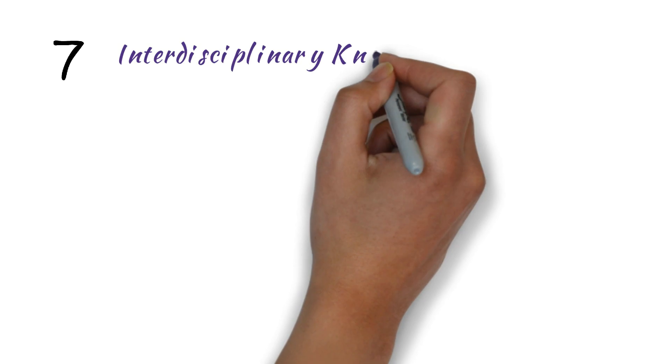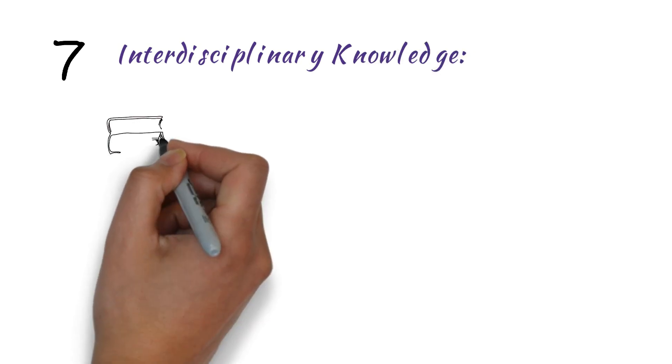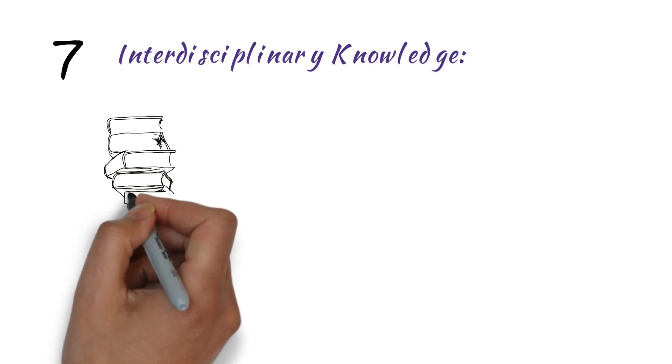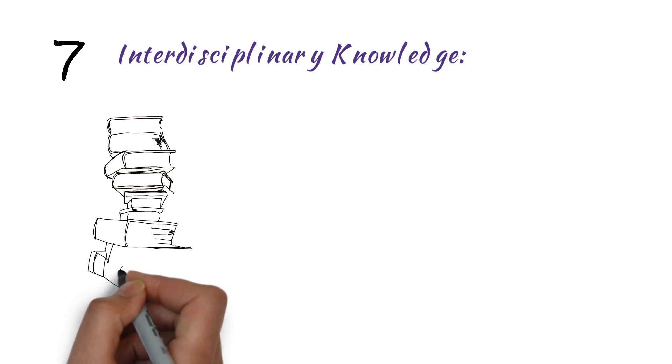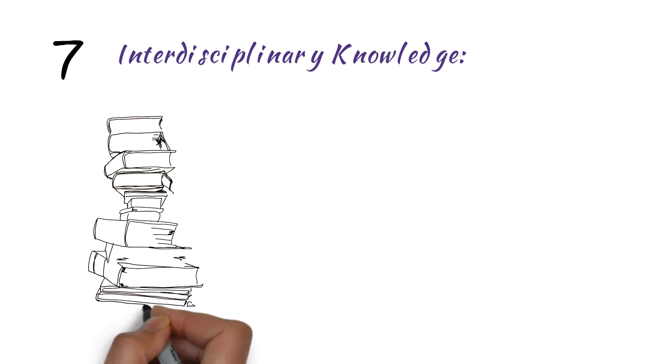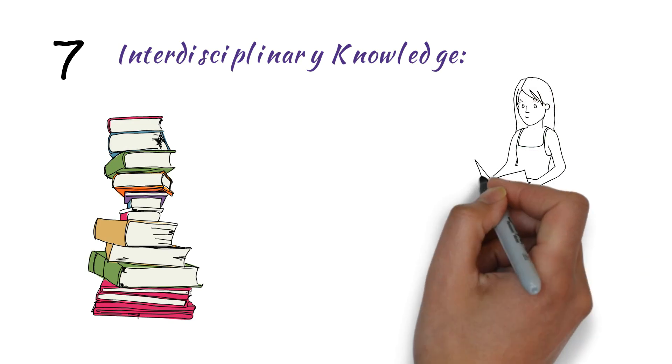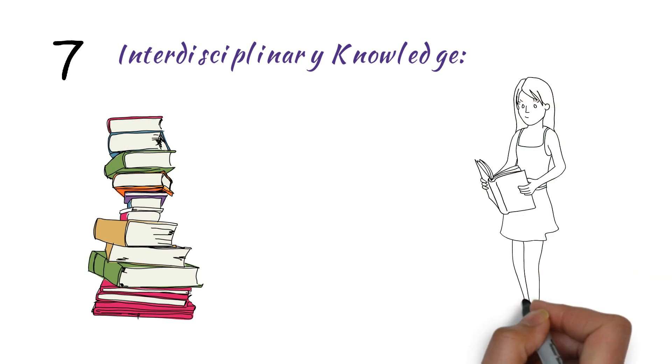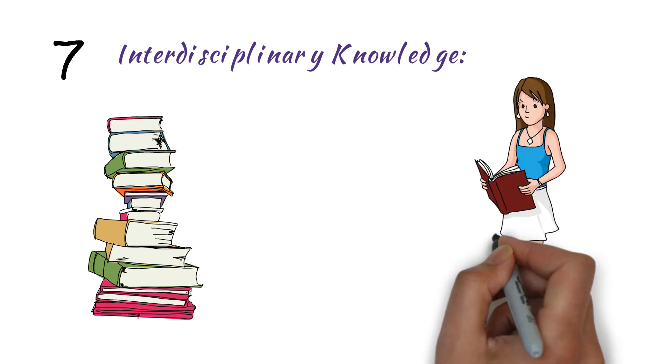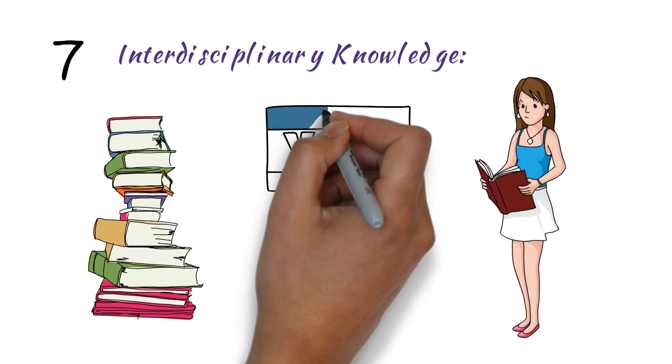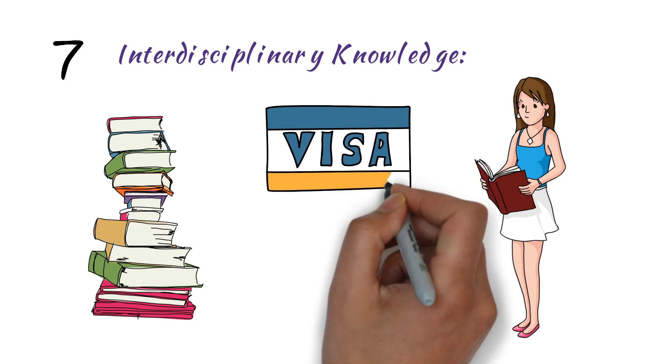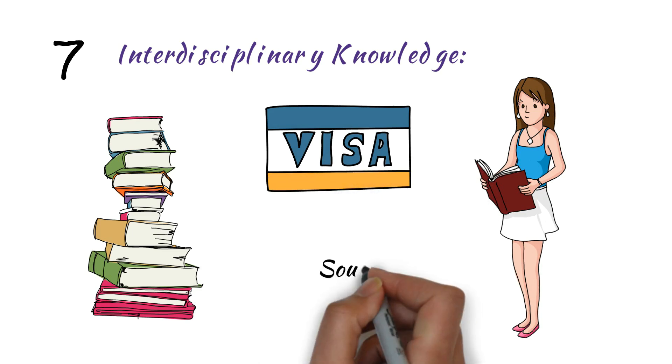Interdisciplinary Knowledge: Your future career will require you to pull information from many different fields to come up with creative solutions to future problems. This skill's easy to work on as well. Start by reading as much as you can about anything and everything that interests you. Once you get to college, consider double majoring or minoring in completely different fields. Trust me, it'll pay off in the long run.